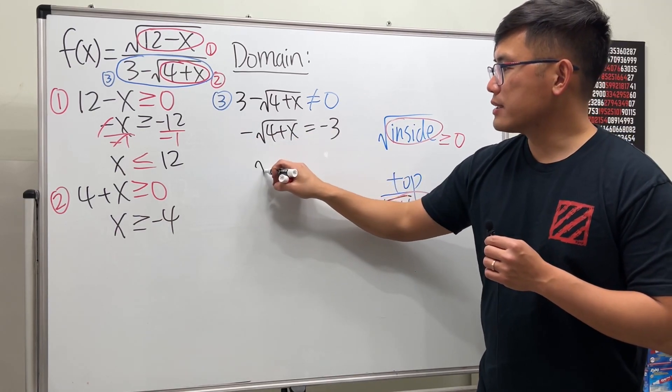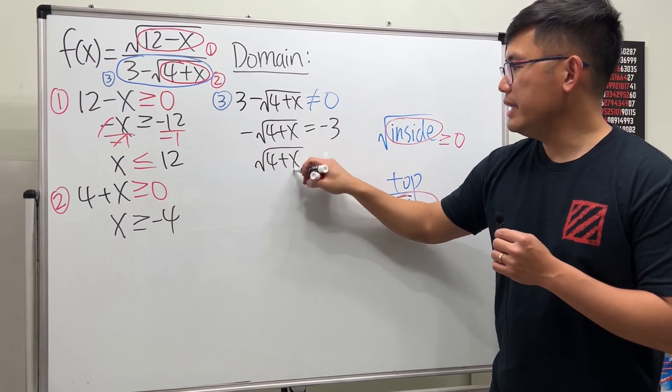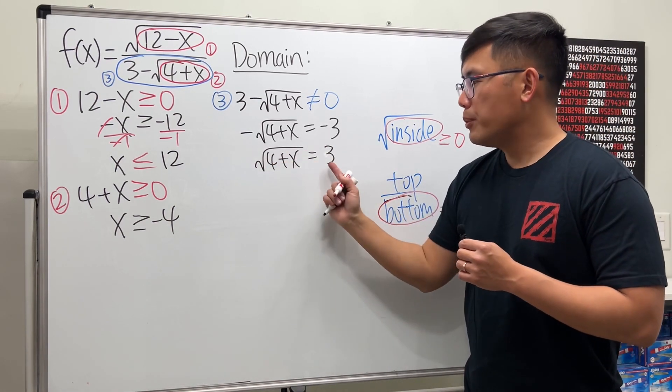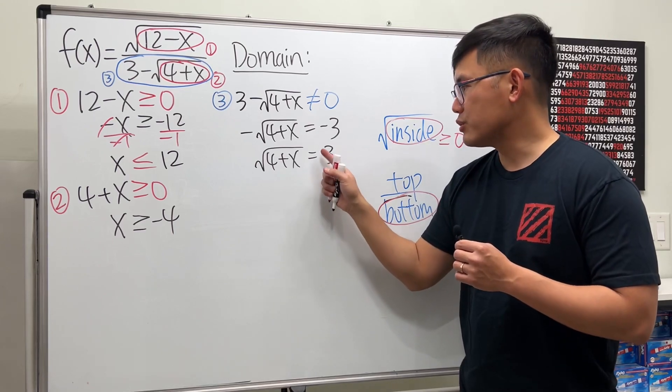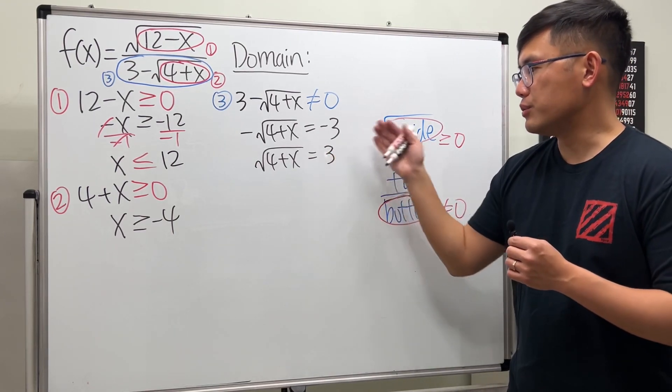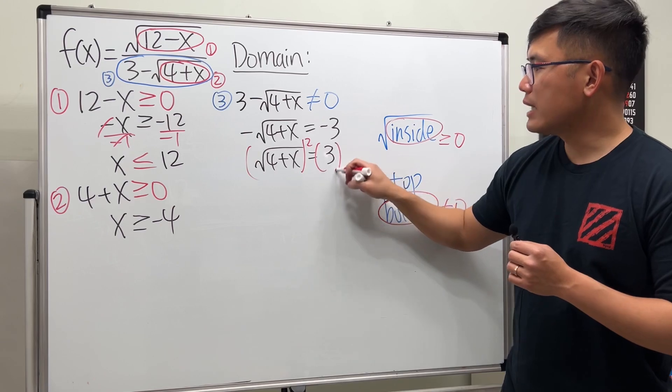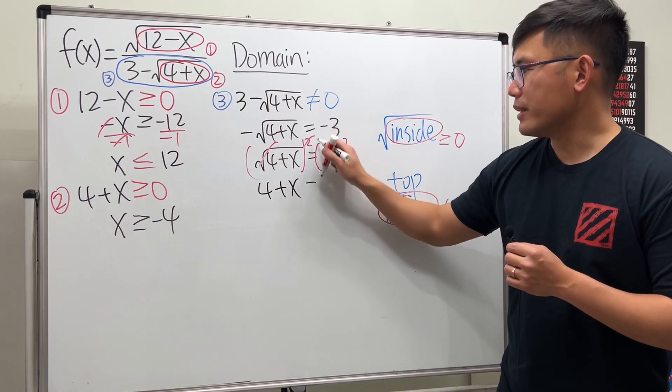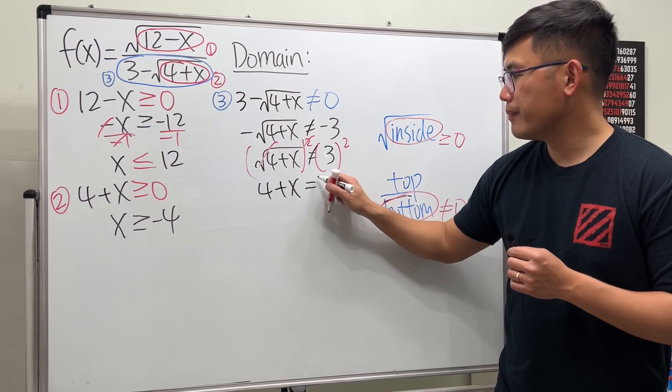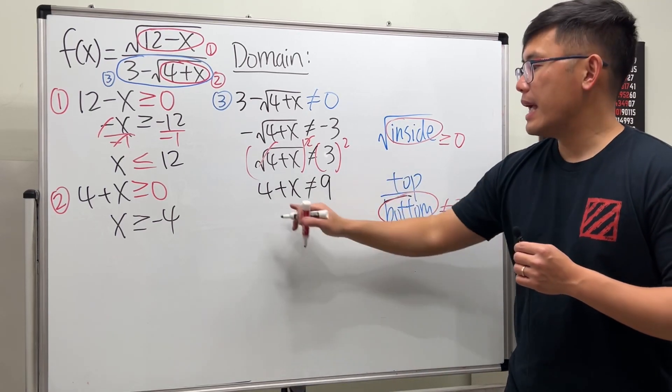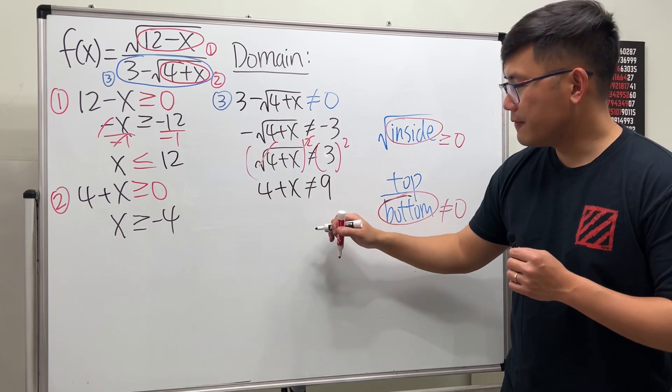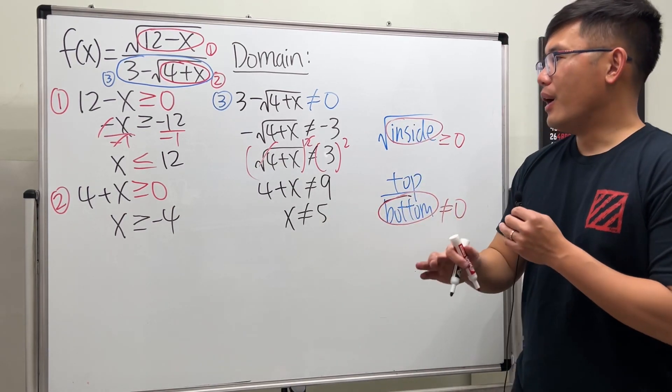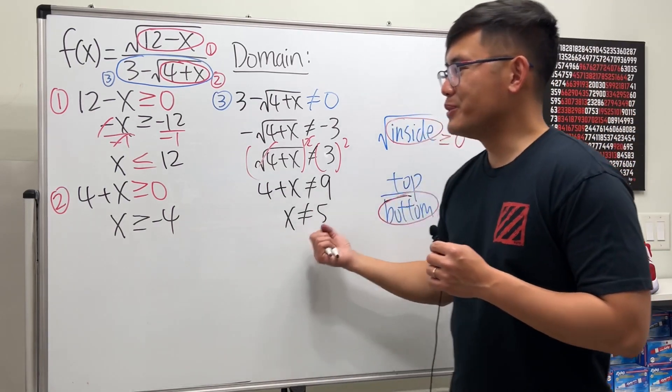Divide both sides by negative, we get square root of 4 plus x equals positive 3. So we can proceed because square root, the output has to be a non-negative number, so this right here it's good, it's three, it's good. Go ahead, square both sides, cancel this, we get 4 plus x not equal to nine. Finally, minus the four on both sides. The answer is x is not equal to five.